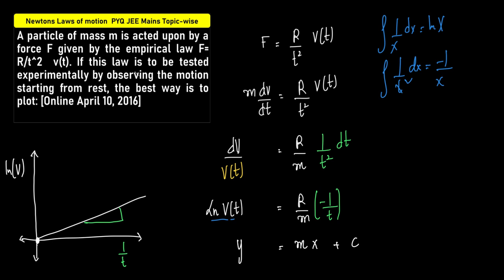So instead of 1/x², we have 1/t². Therefore, instead of -1/x, we get -1/t.